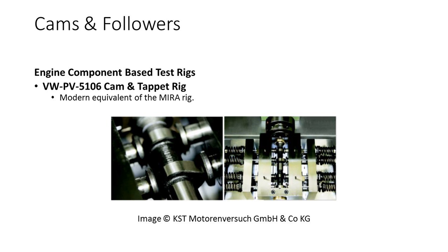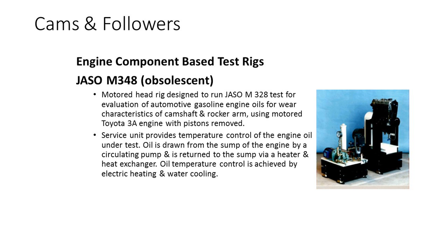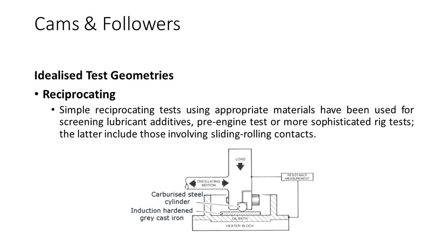A modern equivalent to the Myra rig is the VW PV5106 cam and tappet rig, designed to run the standard JASO M328 test for the evaluation of automotive gasoline engine oils for wear characteristics of camshaft and rocker arm. In this configuration the rig is fitted with a Toyota 3A engine, comprising three modules: the engine unit, service unit and control unit. The service unit provides temperature control of the engine oil under test, with oil drawn from the sump by a circulating pump and returned via a heater and heat exchanger. Simple reciprocating tests using appropriate materials have been used for screening lubricant additives, pre-engine test or pre-more sophisticated rig tests, including those involving sliding-rolling contacts.